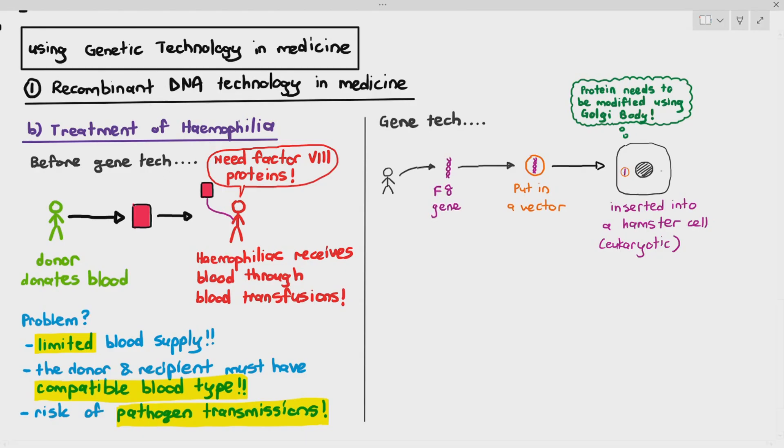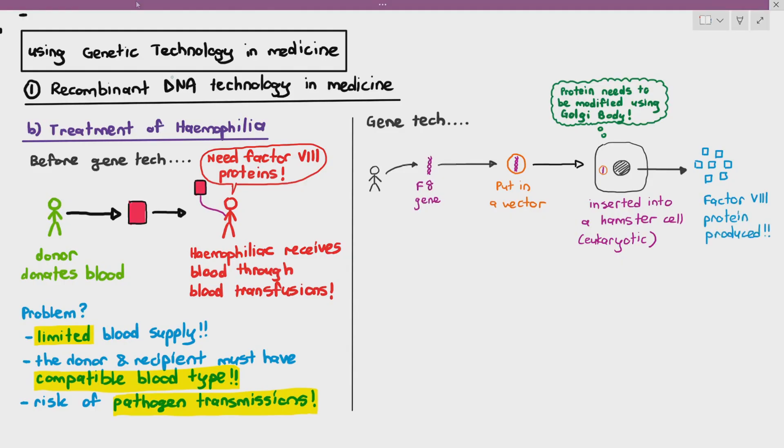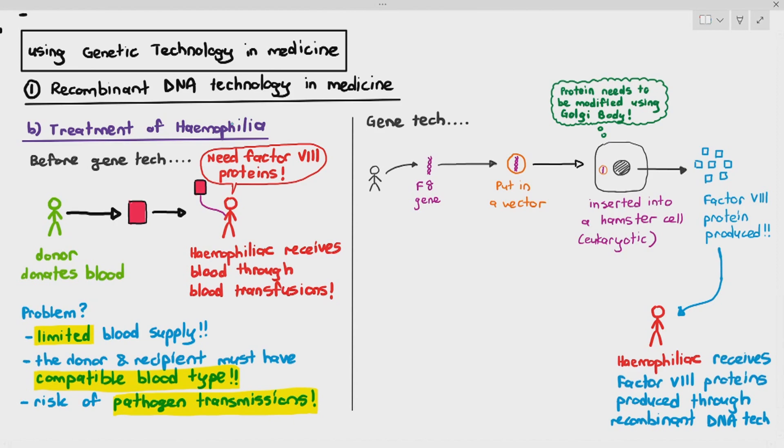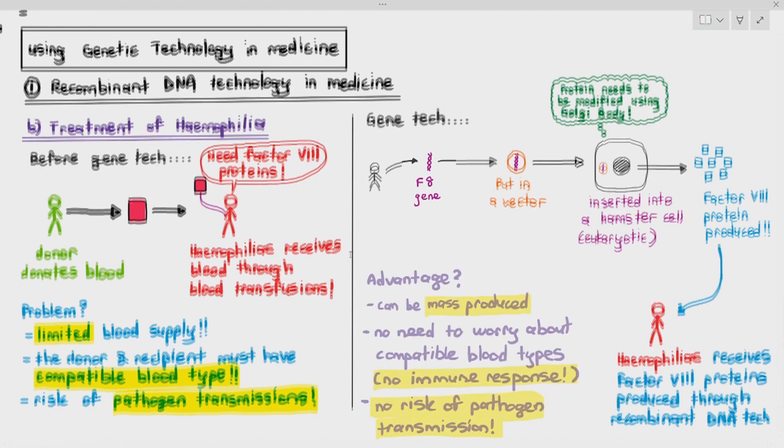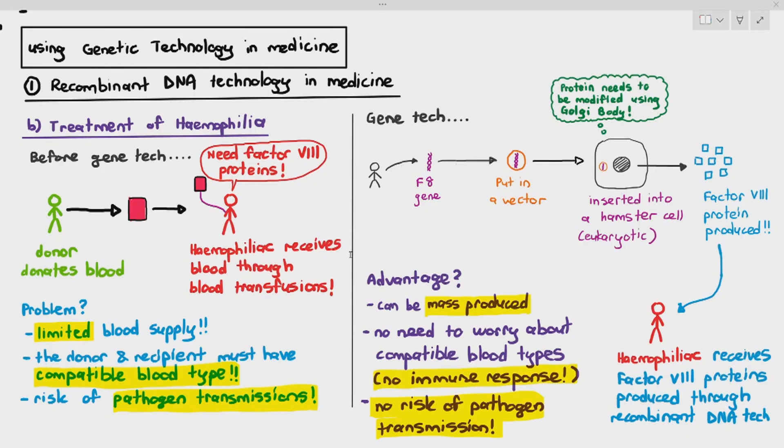In this case here, what happens is the genetically modified hamster cell will then produce factor 8 protein and we just take that factor 8 protein and inject it into the hemophiliac. So the hemophiliac receives factor 8 protein produced through recombinant DNA technology. What's the advantage? We don't have to care about limited blood supply because we are not getting it from blood. We are getting it from the hamster cells. So it can be mass produced easily. Do we have to worry about compatible blood types? No, we don't have to, so there's no immune response. And because we are not using blood, there are no risk of pathogen transmission at all. So this is why recombinant DNA technology solves a lot of problems that existed before gene tech.